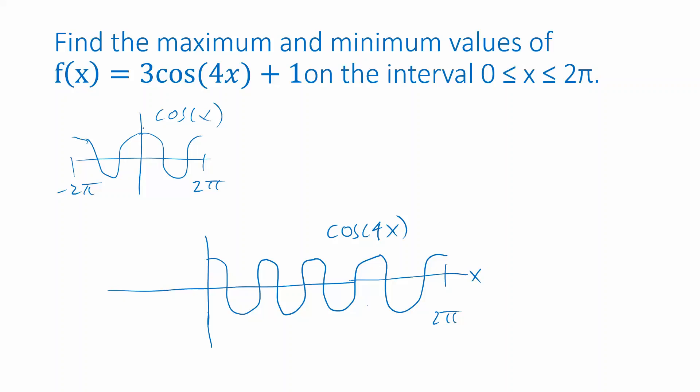Now, what if I multiply by three? That causes a vertical stretch. So instead of it having a maximum output of 1, like cosine of 4x does, after the vertical stretch, it will have a maximum output of 3. And it will have a minimum output of negative 3.